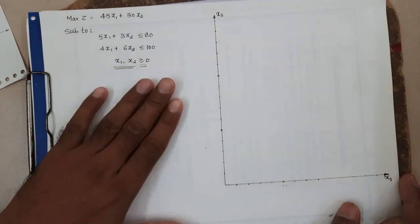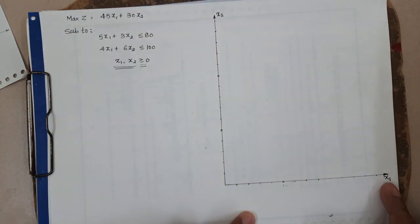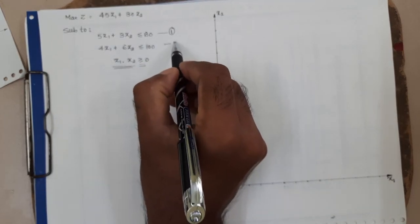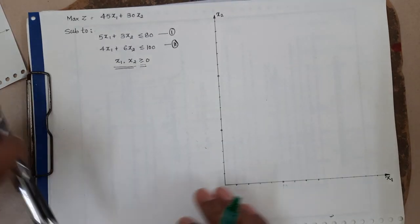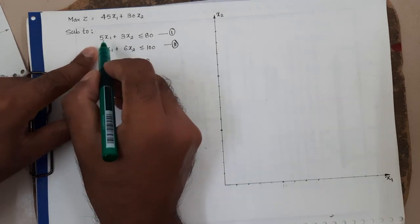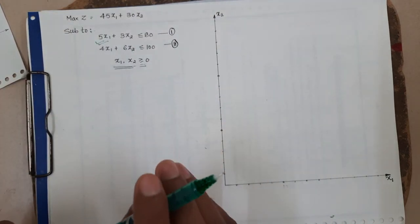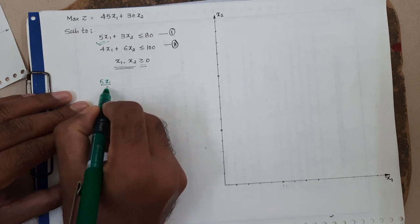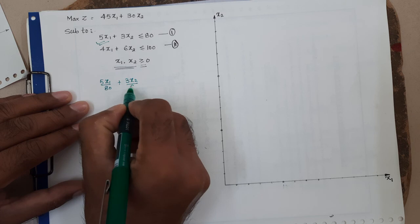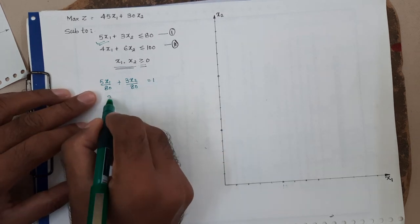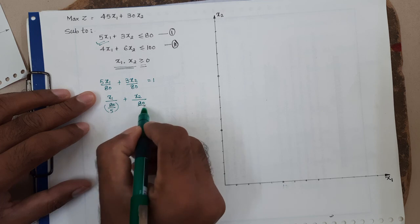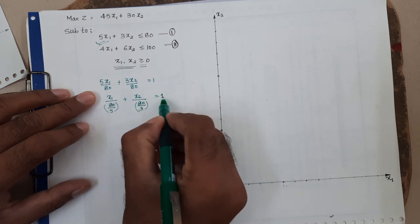Step 1 is over; step 2, we have drawn the two axes as decision variables. Now in step 3, we have to plot the constraints. For constraint 1, we can draw the line using the intercept form: 5x1/80 + 3x2/80 = 1, which gives x1/(80/5) + x2/(80/3) = 1. So the intercept on x1 is 80/5 = 16, and on x2 is 80/3 ≈ 26.7.